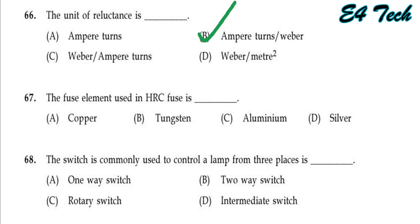The fuse element used in an HRC fuse — options include copper, tungsten, aluminum, and silver. The fuse element used in an HRC fuse is silver. Option D.